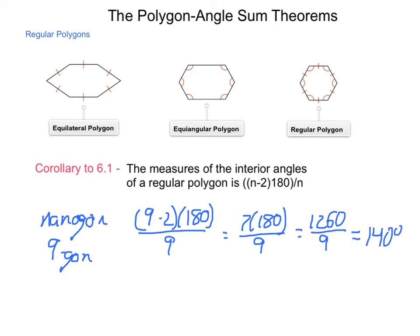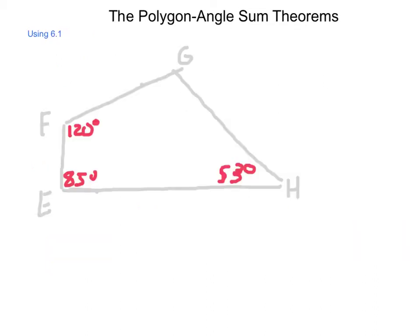So we can use the basic idea of finding the angle sums, then apply it to an equiangular, or more specifically, a regular polygon, and find the measurement of each angle inside. Now, we can use theorem 6.1 and its corollary to help us find missing angles. So here is a shape that we know 3 of the angles, and we need to figure out the 4th.